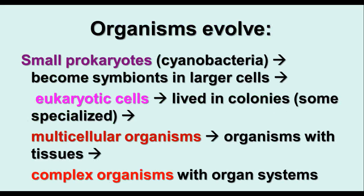So the first organisms to evolve were probably small prokaryotes like cyanobacteria. Over time, they became symbionts in larger cells, producing eukaryotic cells, which then lived in colonies, some of them specialized. That led to the development of multicellular organisms, and then organisms that had tissues, and then more complex organisms with organ systems. It was a very slow process over a long period of time, incorporating one change after another in the populations of organisms that were there.